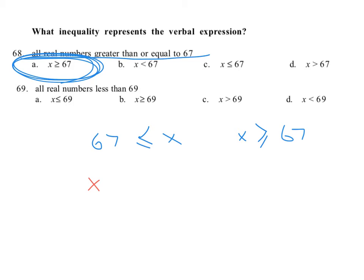So if x represents the numbers, and here's 69, x has to always be less than that. It can't be equal to. It's just got to be less than. All real numbers less than that. And so x has to be less than and be on the small side. So where is that? That is right here at d. Done.